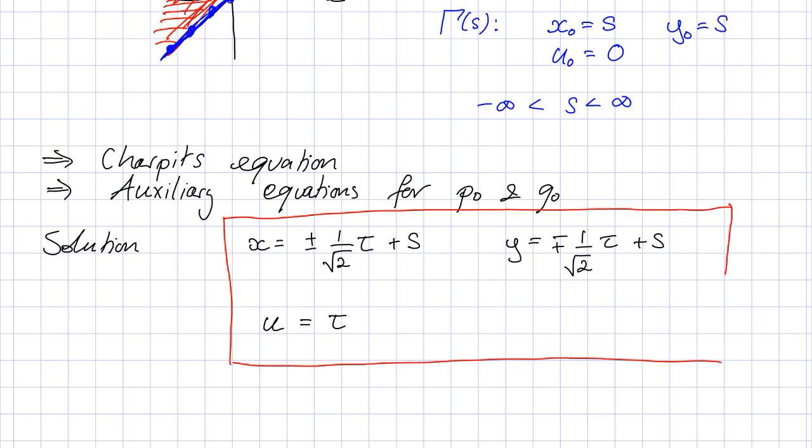This is something you should be able to readily get to yourself. We can say that this parametric variable that we've introduced, tau, remember this is the variable that scans along our characteristic curves. Because this sand pile height has to be greater than or equal to zero, so does this tau. Our height is a positive quantity, so this tau must also be non-negative.